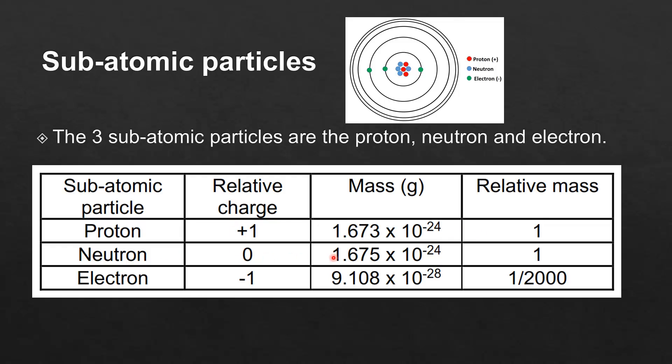The neutron has a relative charge of 0. The mass is almost the same as a proton and the relative mass is the same as a proton which is 1.